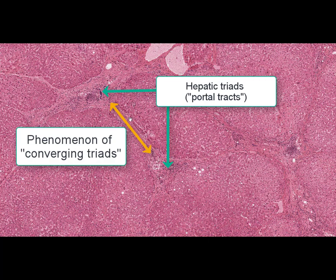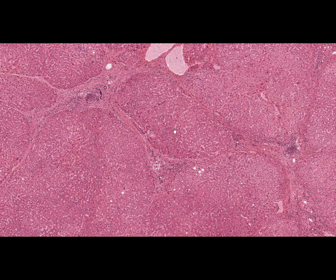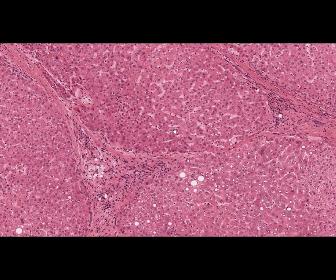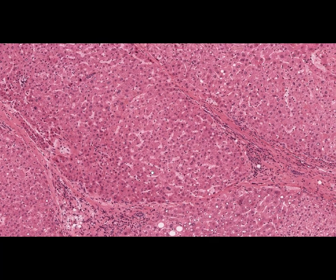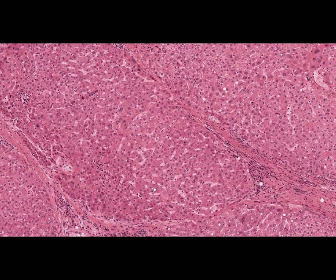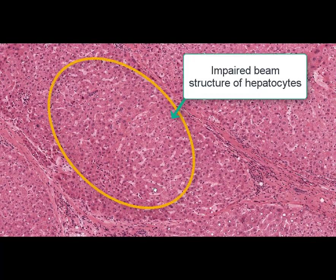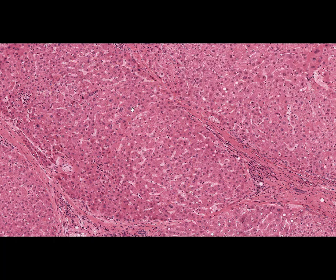Also on this slide we can see a phenomenon of converging threads, which is revealed as a decreased distance between the nearest portal threads. At high magnification, we can see that the beam-like arrangement of hepatocytes is impaired in false lobules, and we cannot find a central vein in the majority of those lobules.